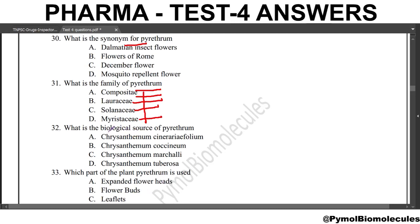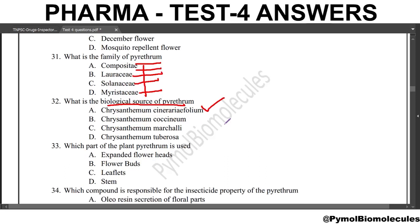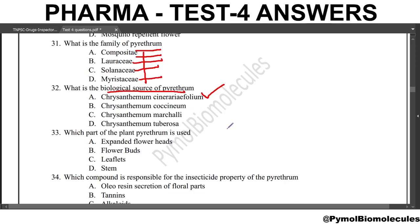Next question: what is the biological source of pyrethrum? The answer is Chrysanthemum cinerariaefolium. Next question: which part of the pyrethrum plant is used? The expanded flower is used. Flower buds are used in the case of clove, and leaflets in the case of senna.